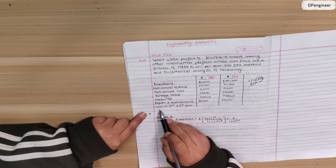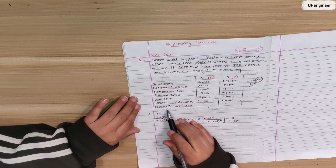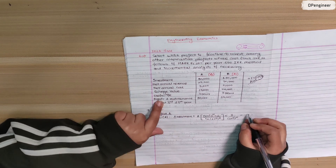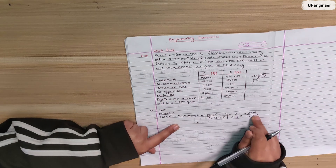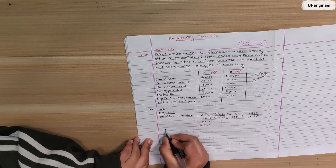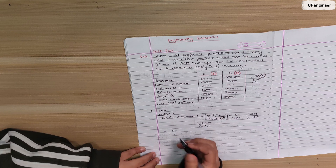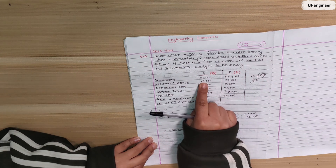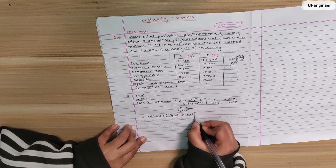Also subtract the repair and maintenance costs at the third and fifth year, converting each to present worth. Project A has an investment of $50,000, net annual revenue of $25,000, and annual cost of $3,000. So the net annual amount is $25,000 minus $3,000, giving $22,000 per year.